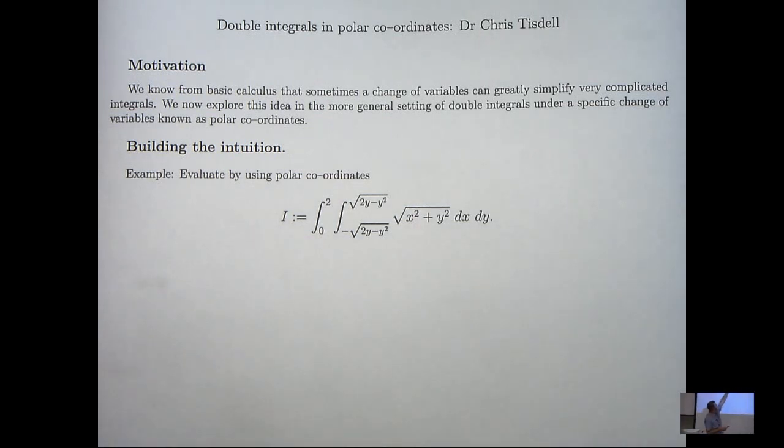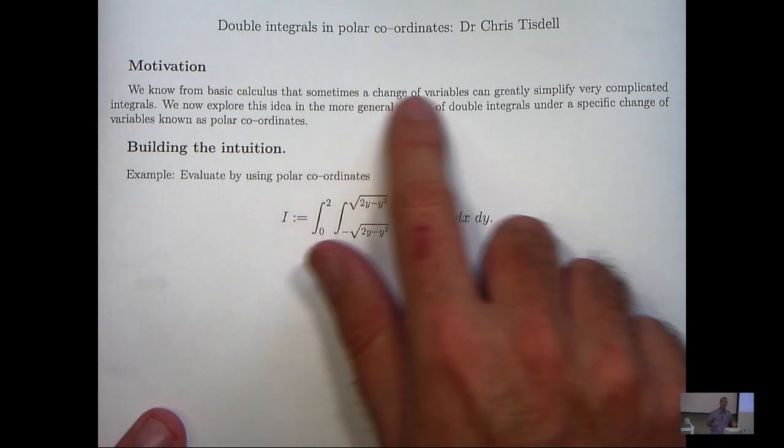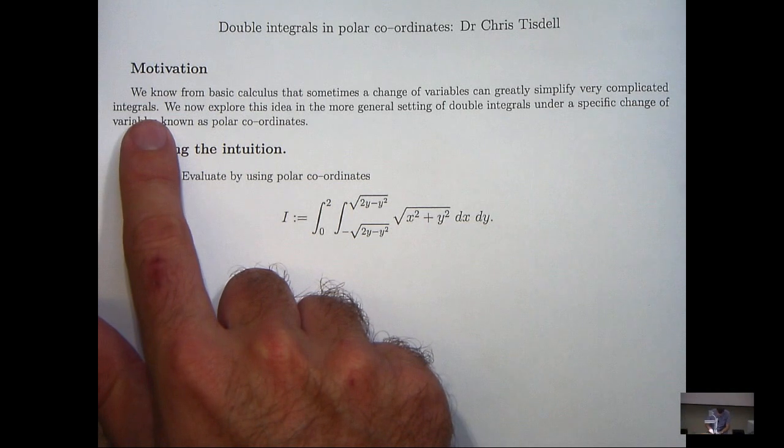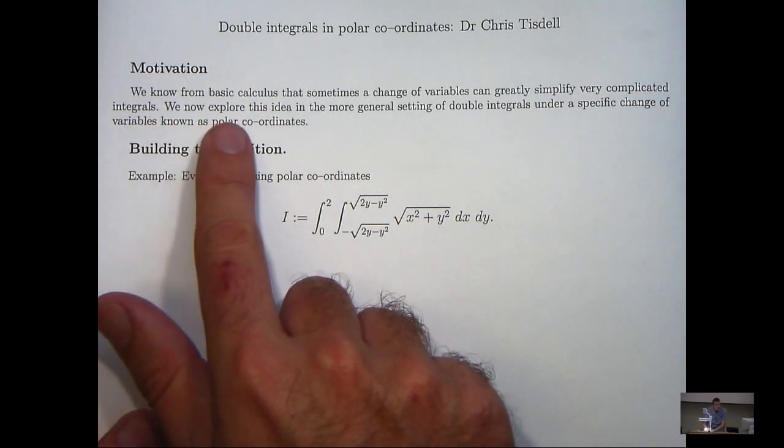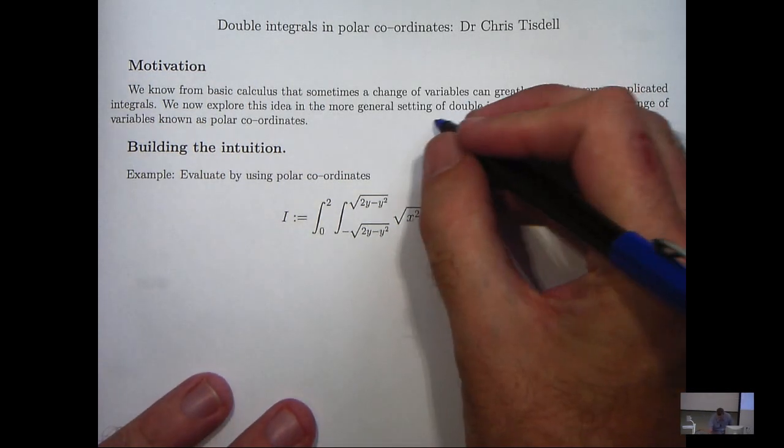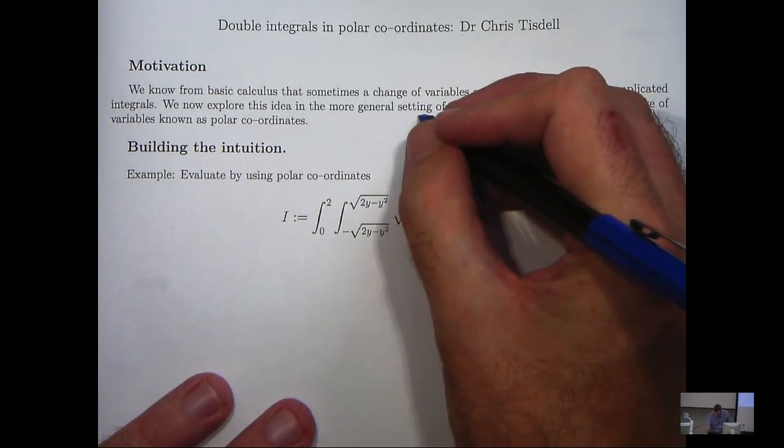But before we get to the example, think back to your high school calculus. Hopefully you can remember that a change of variables or a substitution can greatly simplify complicated integrals. And this video is going to explore this idea in the more general environment of double integrals. And in particular, we're going to use a specific substitution involving polar coordinates.